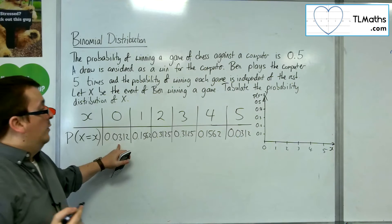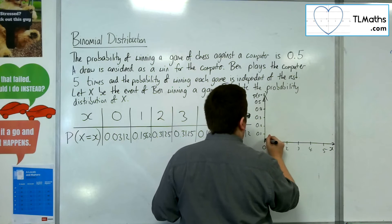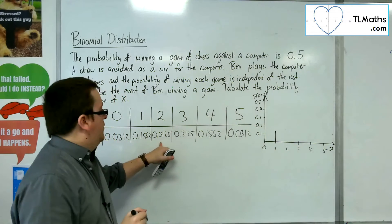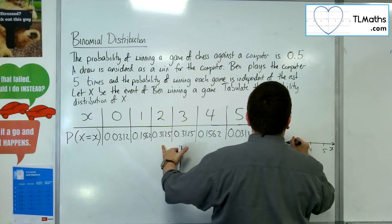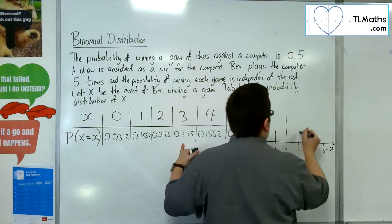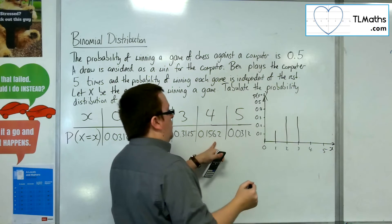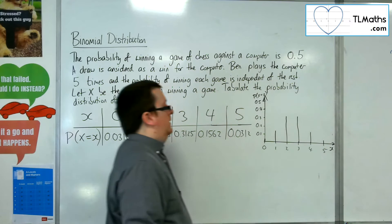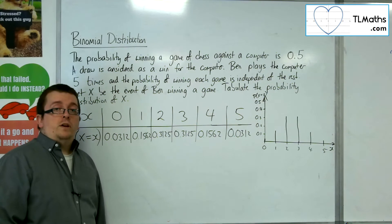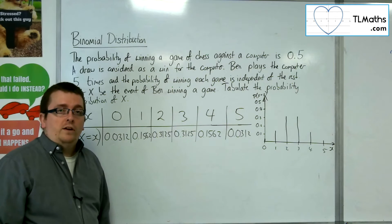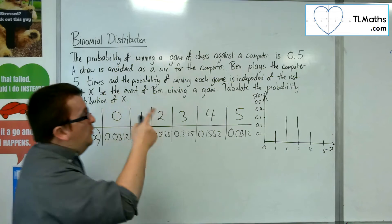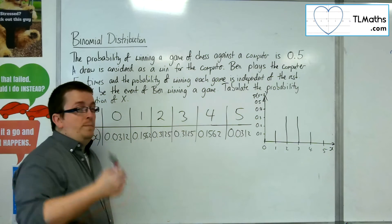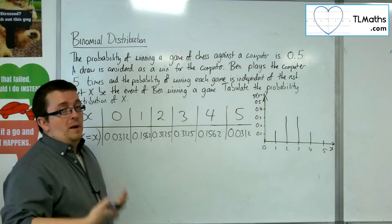So the probability of getting 0 is 0.0312, something like there. Then to get 1 is 0.1562, so about there. 0.3125 for 2, about there. Then 0.3125 again for 3. Then for 4 it's 0.1562, and then for 5 it's 0.0312. So what you find is that it's symmetric. And maybe you had guessed that that's what it was going to look like, because the probability is 0.5. So you're getting this symmetric distribution when the probability is 0.5.